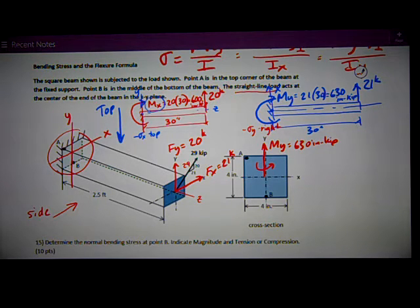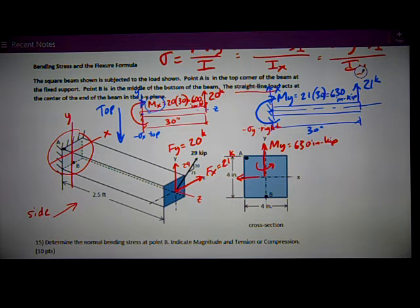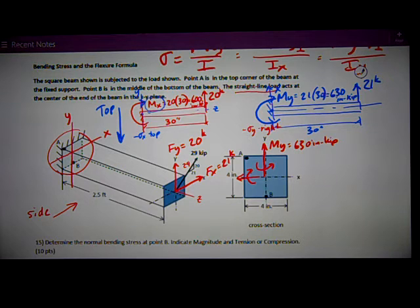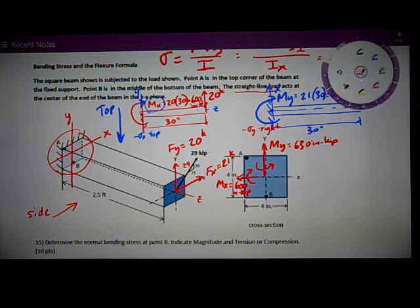MX creates compression on the top, so by the right-hand rule the vector would point to the left with rotation that way, creating compression on the top. MX is 600 inch kips. Now I like to divide this into quadrants with the two axes, X and Y, dividing it into quadrants and then write what the stresses are going to be.